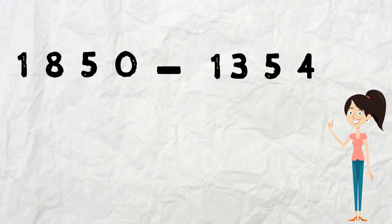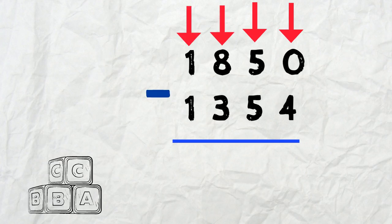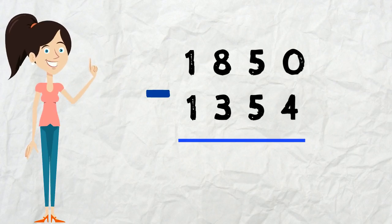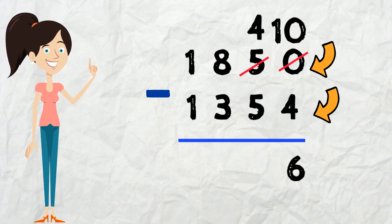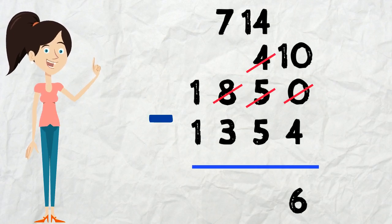Let's try another problem with four-digit numbers: 1,850 take away 1,354. We set up the numbers with ones, tens, hundreds, and thousands each in their own column, draw the line and minus sign. Starting with ones: 0 take away 4 — the top number is smaller, so we borrow from the next-door neighbor. The 5 in the tens place turns to 4, and the borrowed 10 turns 0 into 10. Then 10 take away 4 equals 6.